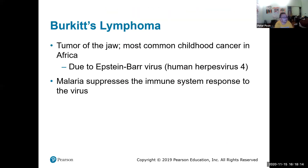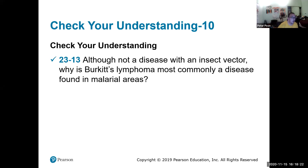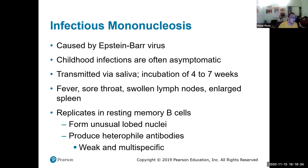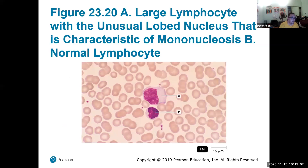Burkitt's lymphoma is due to Epstein-Barr virus, also known as human herpesvirus 4. For some reason, having malaria lowers your immune response to Burkitt's lymphoma. Infectious mononucleosis — otherwise known as mono or kissing disease — is also caused by Epstein-Barr virus. The virus replicates in resting memory B cells, and you can see weird-looking nuclei in those cells, including this unusual bi-lobed nucleus.